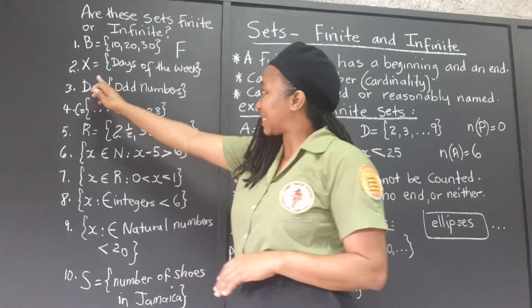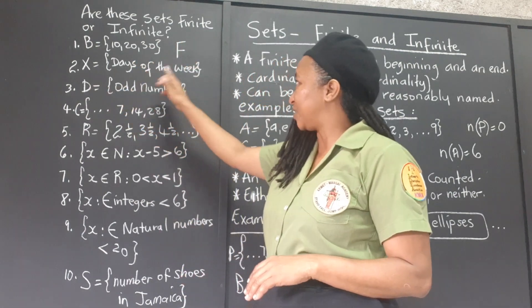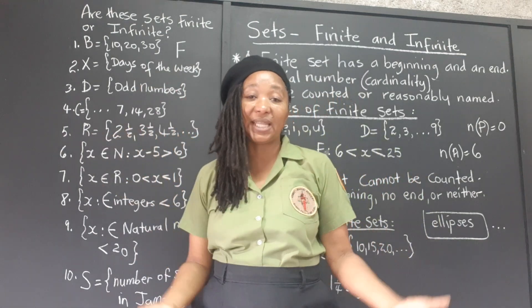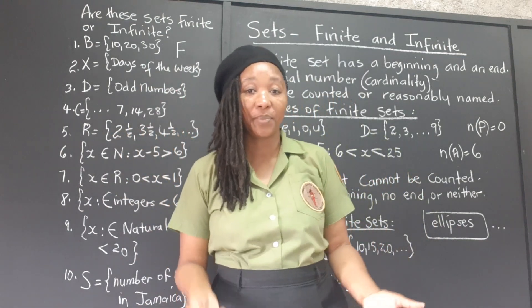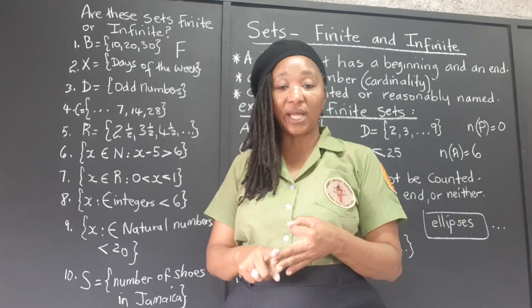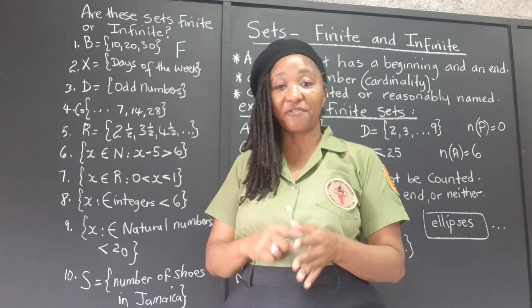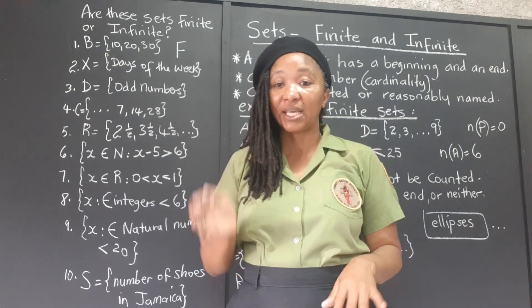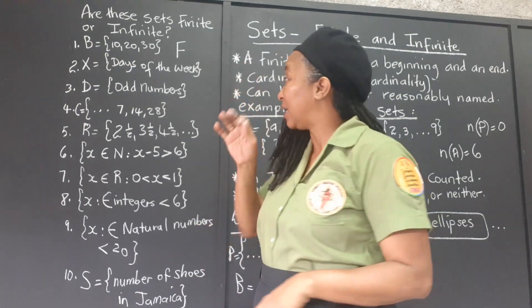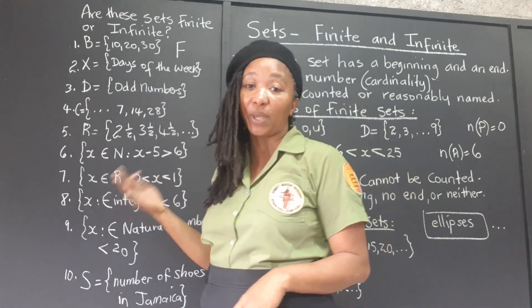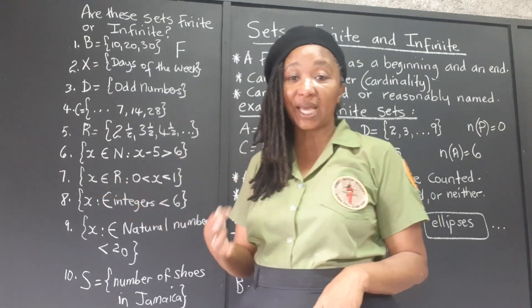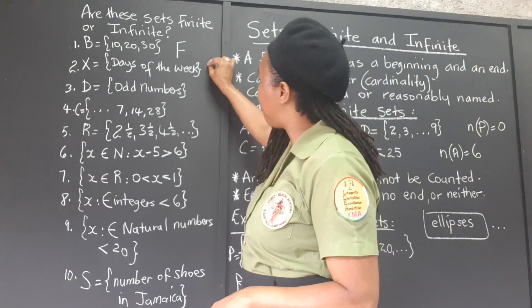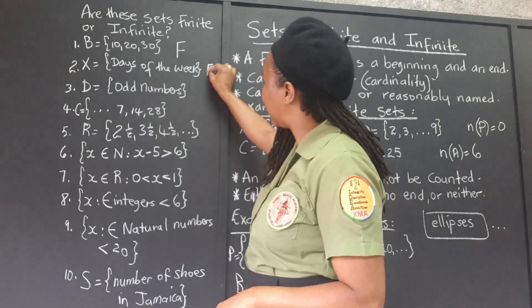Set X is the set of days of the week. We could list them: Monday, Tuesday, Wednesday, Thursday, Friday, Saturday, Sunday. There are seven days in the week, so it has a cardinality of seven. We can absolutely name and list them, so this is a finite set.